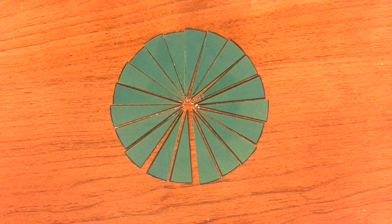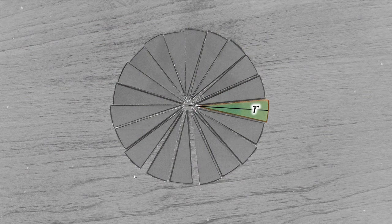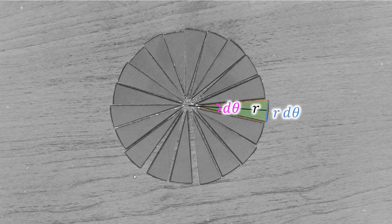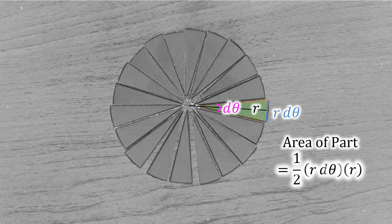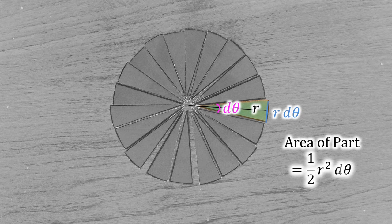Here is our circle. Assume that we have an infinite amount of slices instead of a finite amount. Here is the radius, here is dθ, and this would be r·dθ. As the circle gets more and more slices, that blue line becomes more and more like a line. Because we have an infinite amount of slices, that green section would be considered a triangle. So that area would be ½ base times height, or ½·r·dθ·r, which gives ½·r²·dθ.